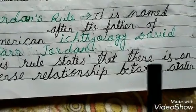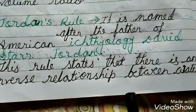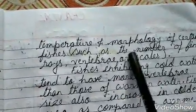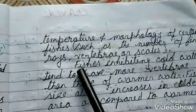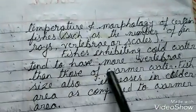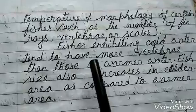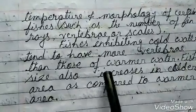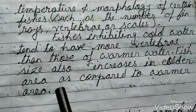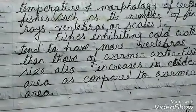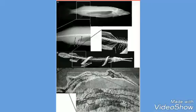This rule states that there is an inverse relationship between water temperature and the morphology of certain fishes, such as the number of fins, rays, vertebrae, and scales. Fish in cold water tend to have more vertebrae than those in warmer water. Fish size also increases in colder areas compared to warmer areas.